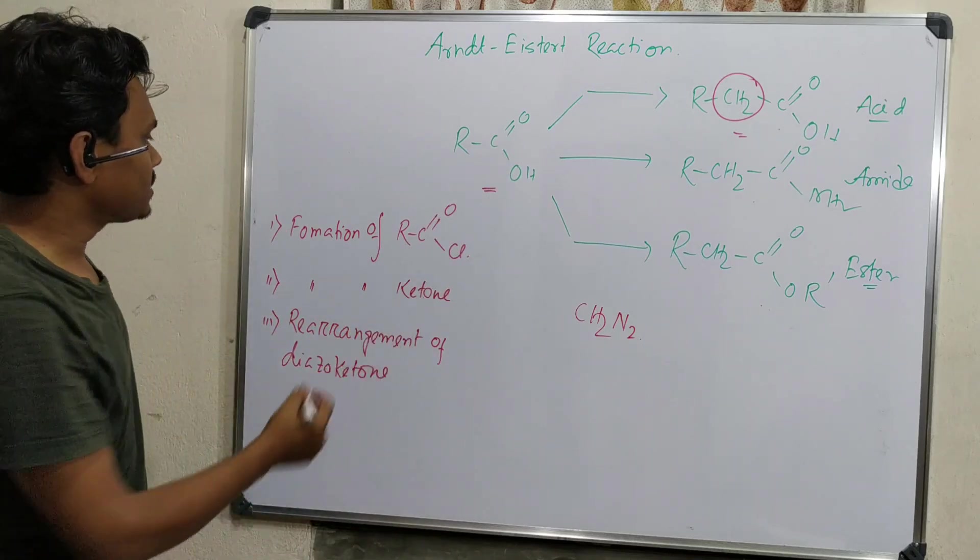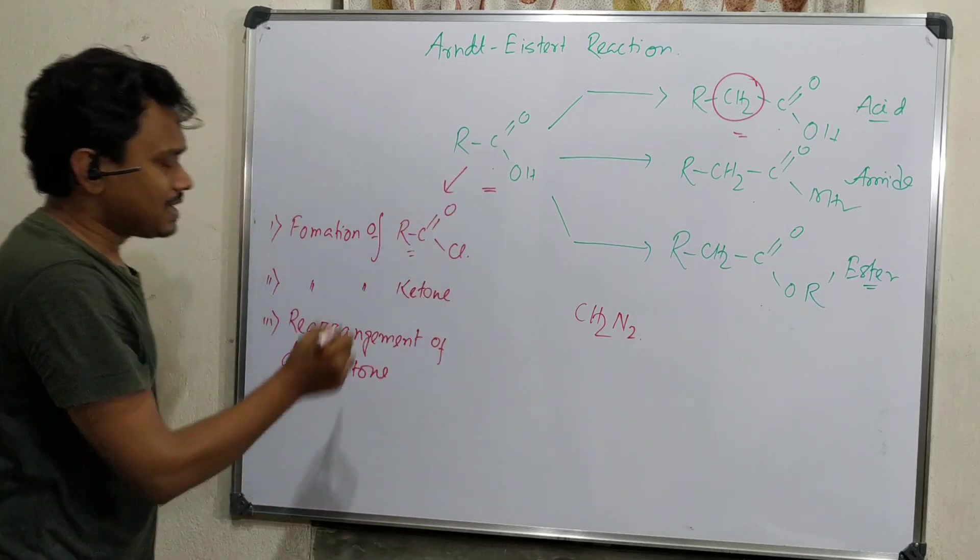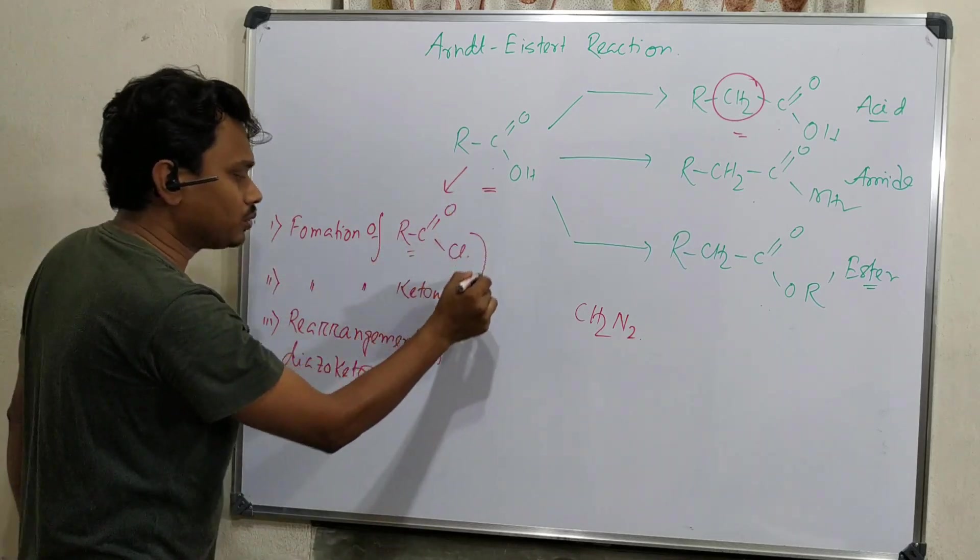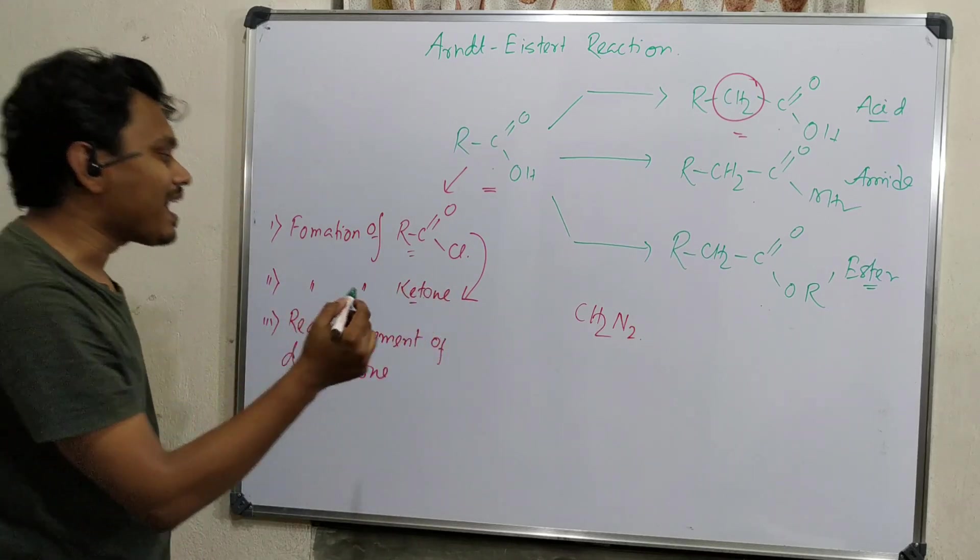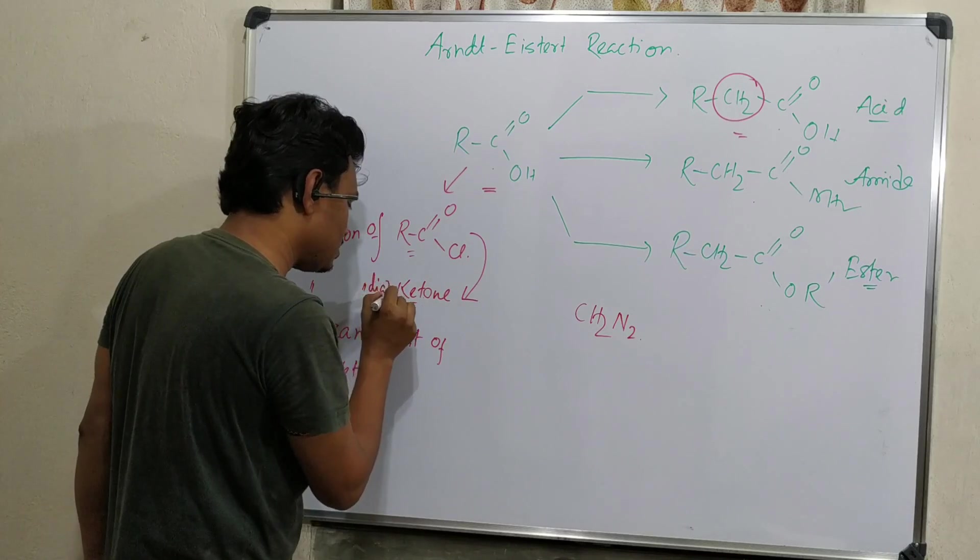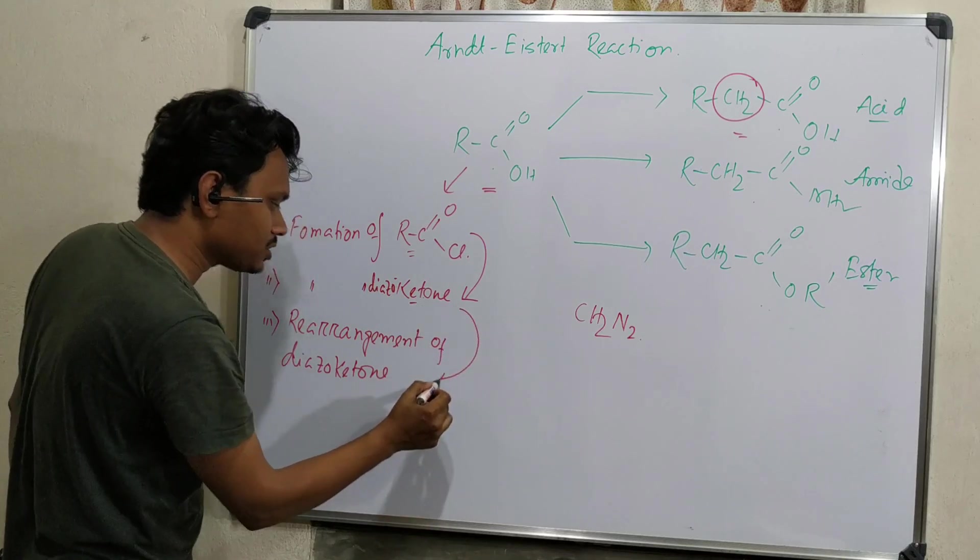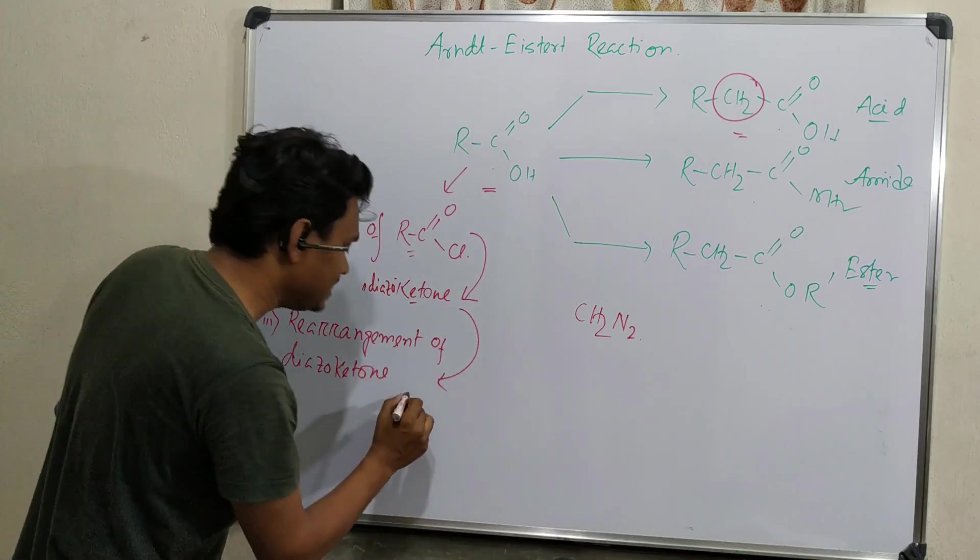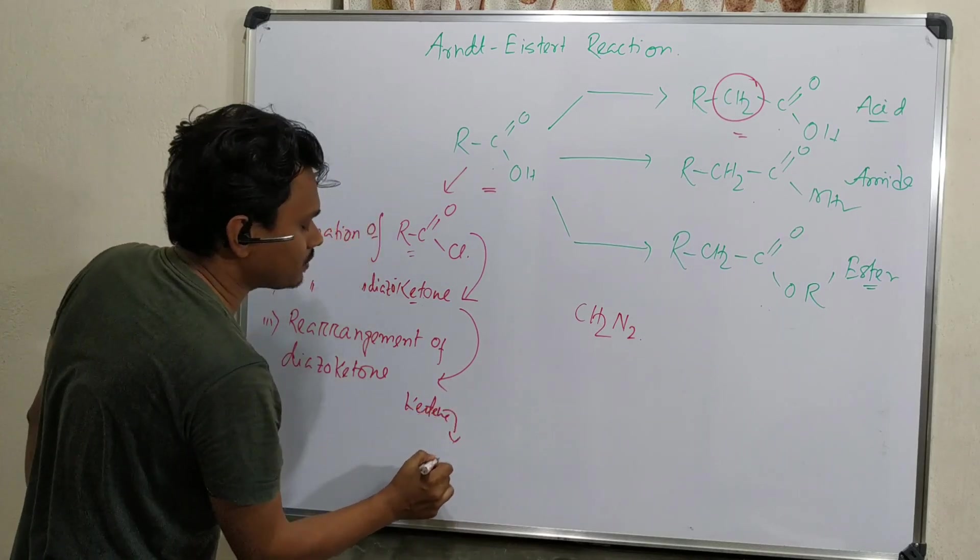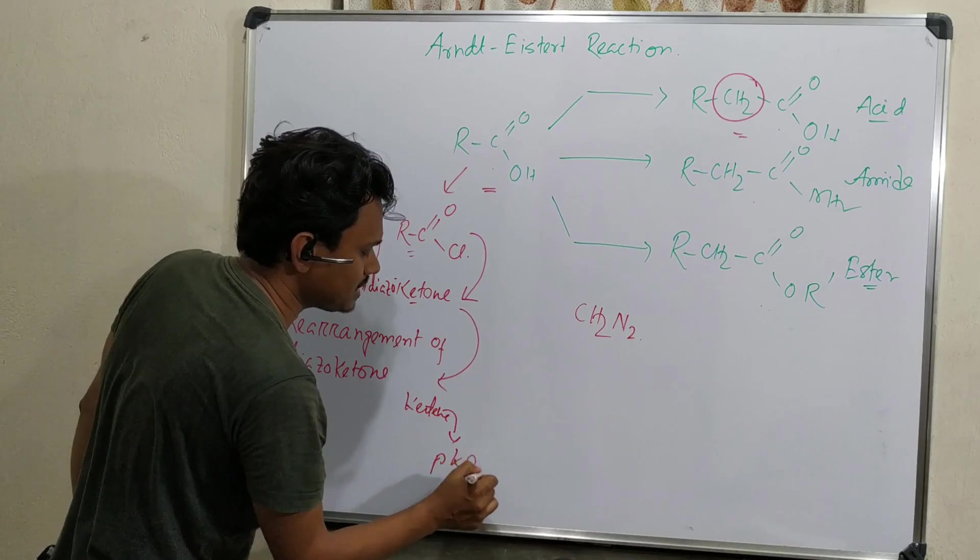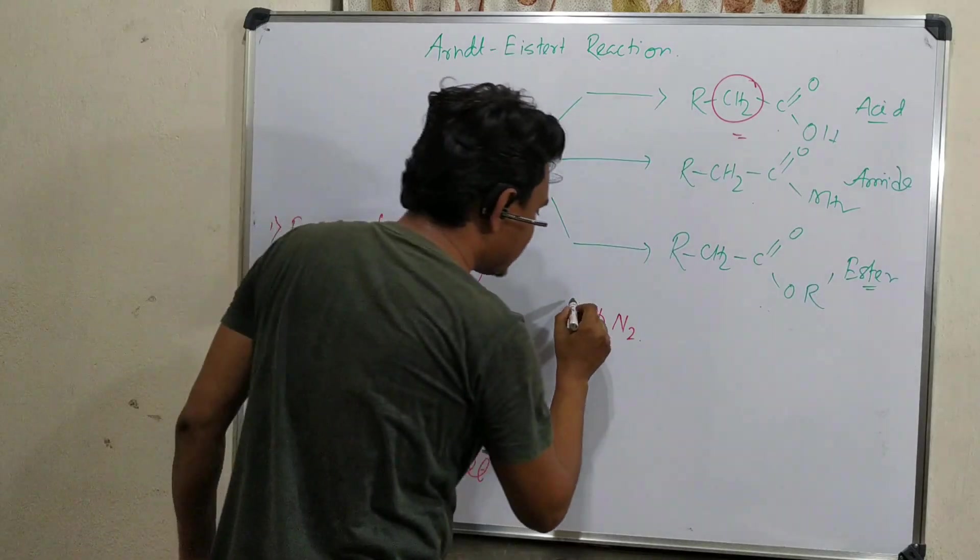This reaction is divided into three stages. First is formation of acid chloride from carboxylic acid. Second is acid chloride to a diazo ketone, more specifically. And finally, rearrangement of diazo ketone to obtain a ketene type intermediate, and from here we will have the product. I shall explain the mechanism also.